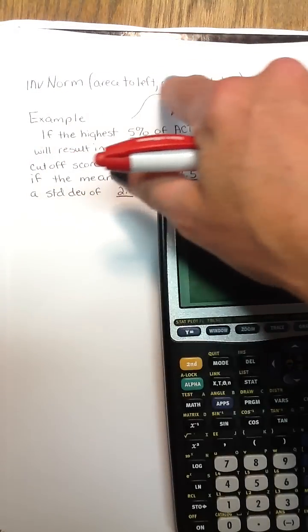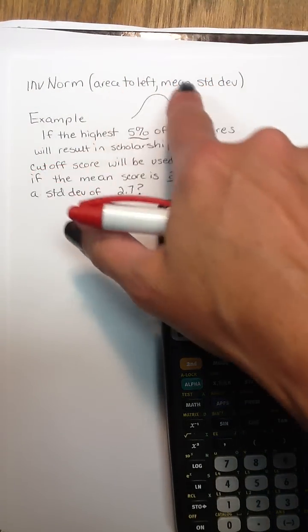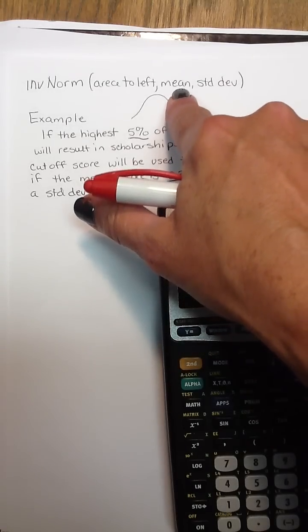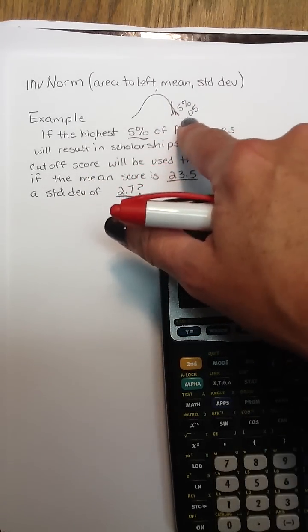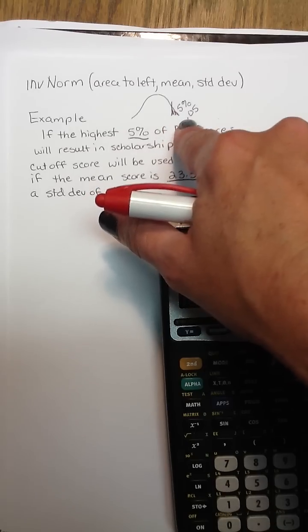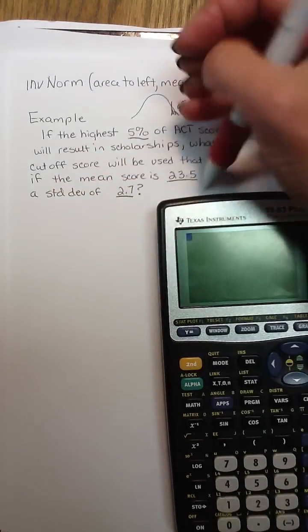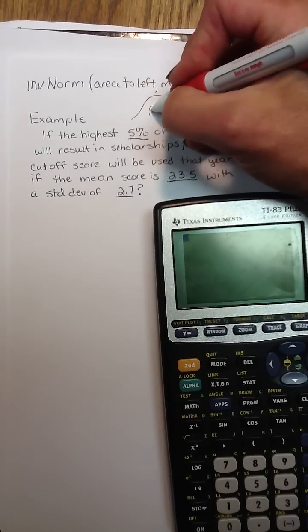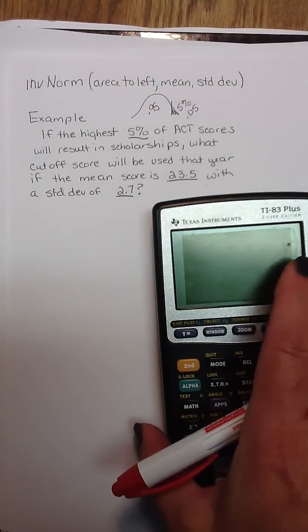We're going to be using that inverse norm function, first of all putting in the area to the left, then the mean and the standard deviation. Now if we have 5% to the right of the cutoff, that means that 95% or .95 is the area to the left.